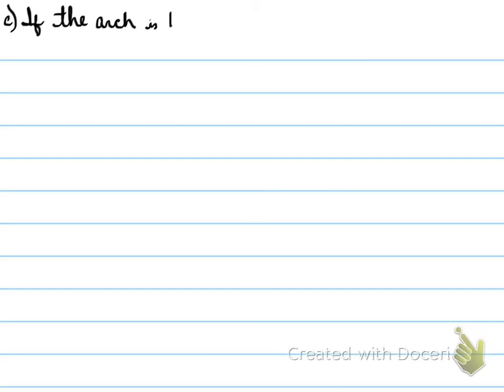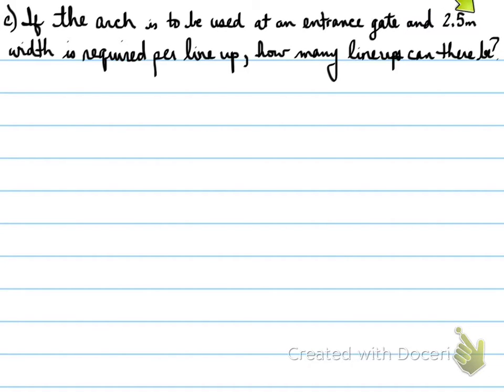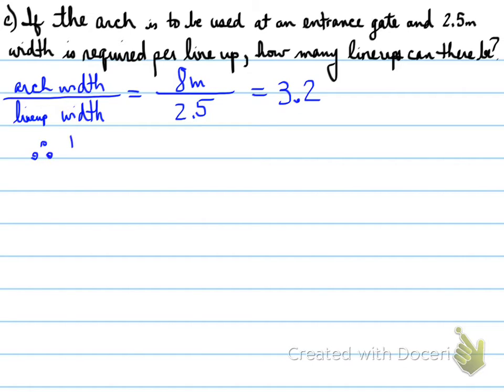Part C. If the arch is to be used at an entrance gate and 2.5 meters width is required per lineup, how many lineups can there be? Well, think about it. You have the arch width, and if you divide that by the lineup width, that should give us how many lineups we can have. 8 meters divided by 2.5 meters will give us 3.2. You can't have 0.2 of a lineup, so there can only be a total of 3 lineups altogether.